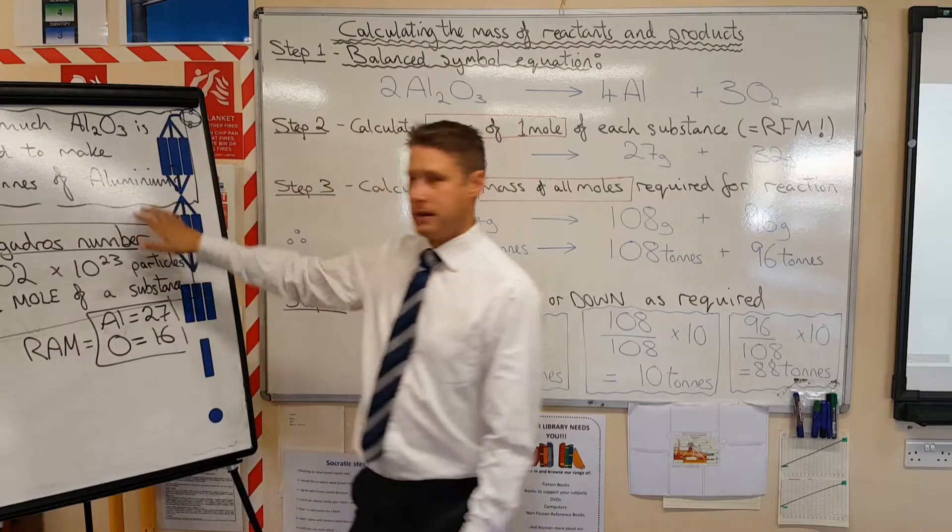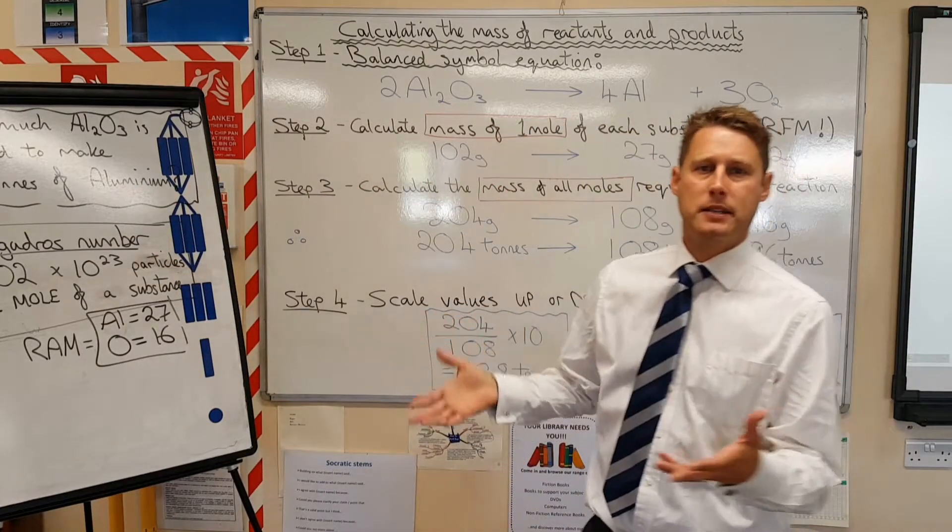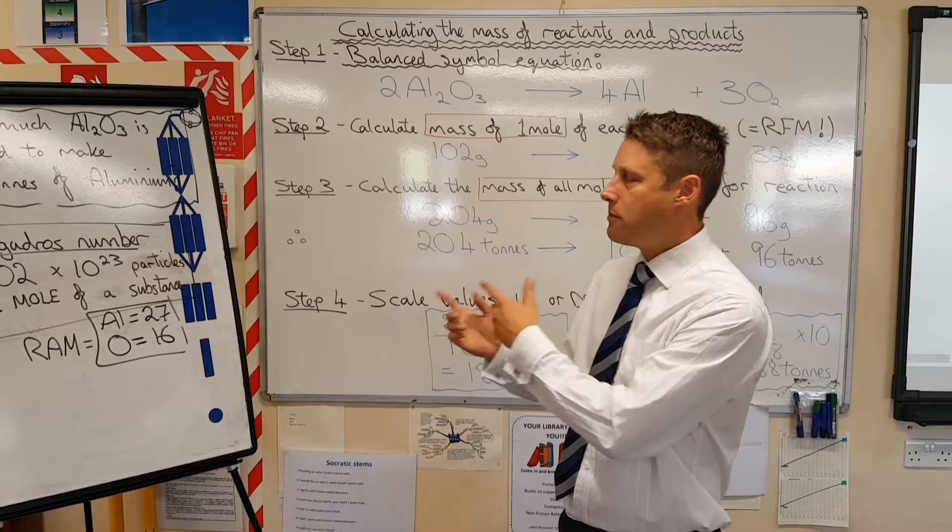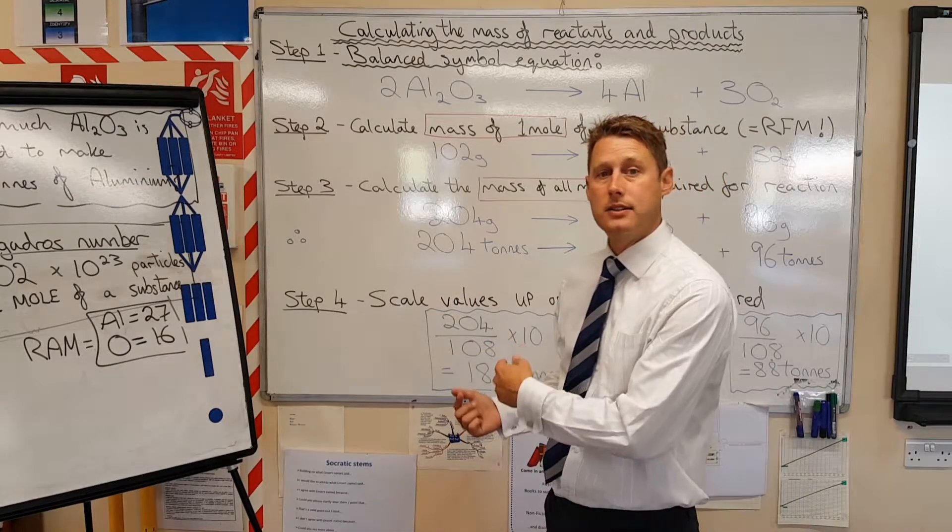10 tonnes of aluminum and your boss says to you, you need to make 10 tonnes of aluminum. How much aluminum oxide are you going to need in order to make your 10 tonnes?